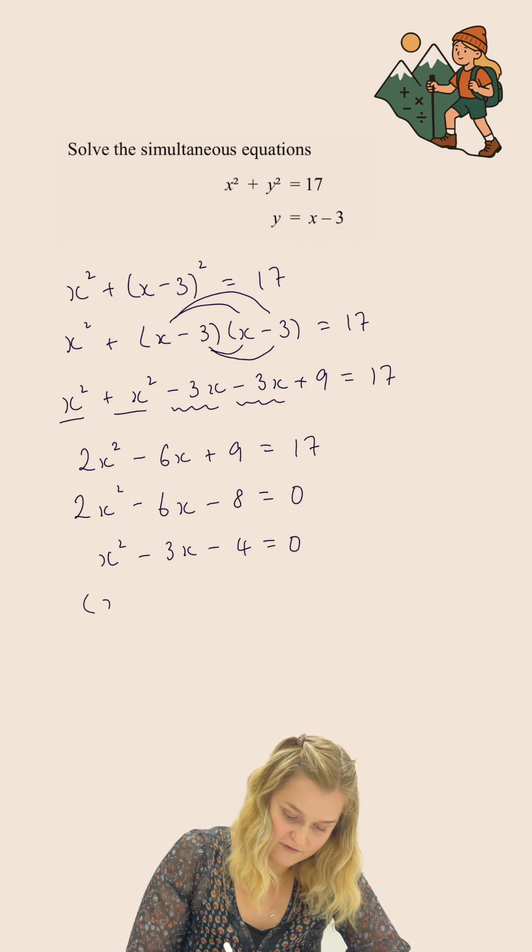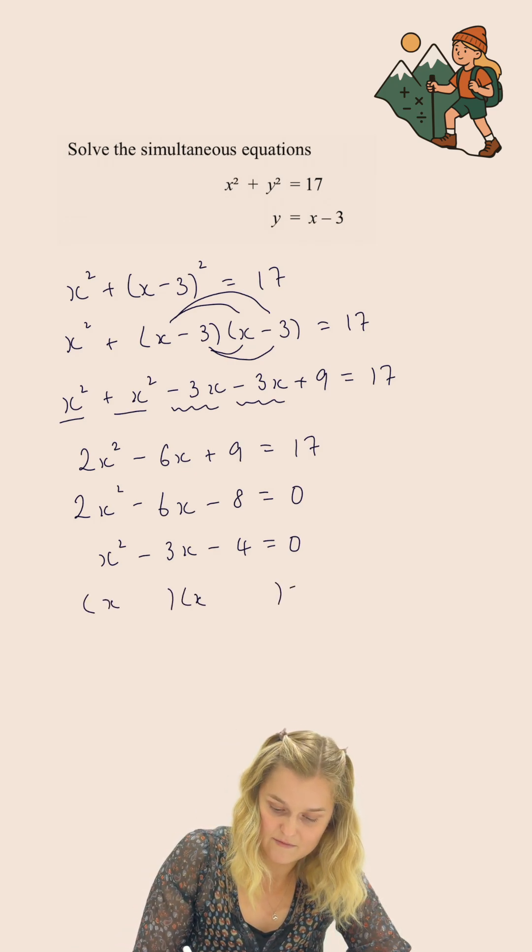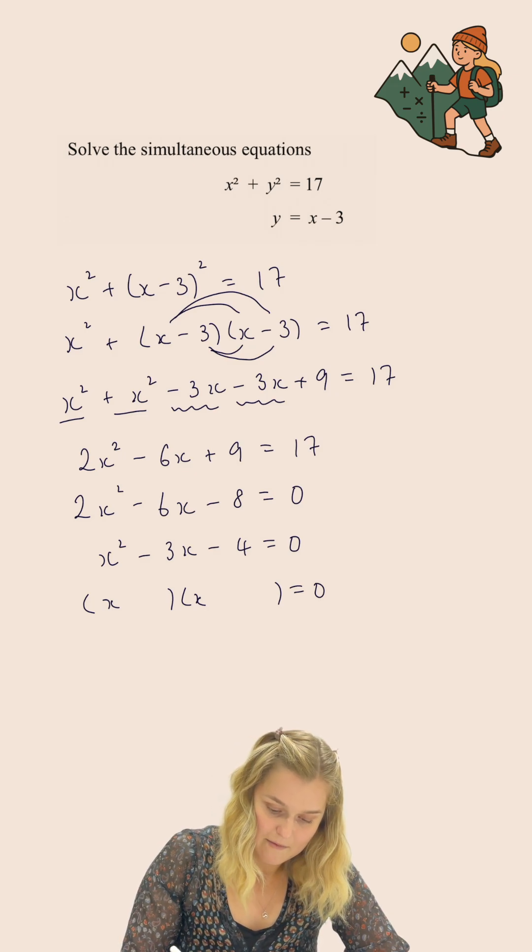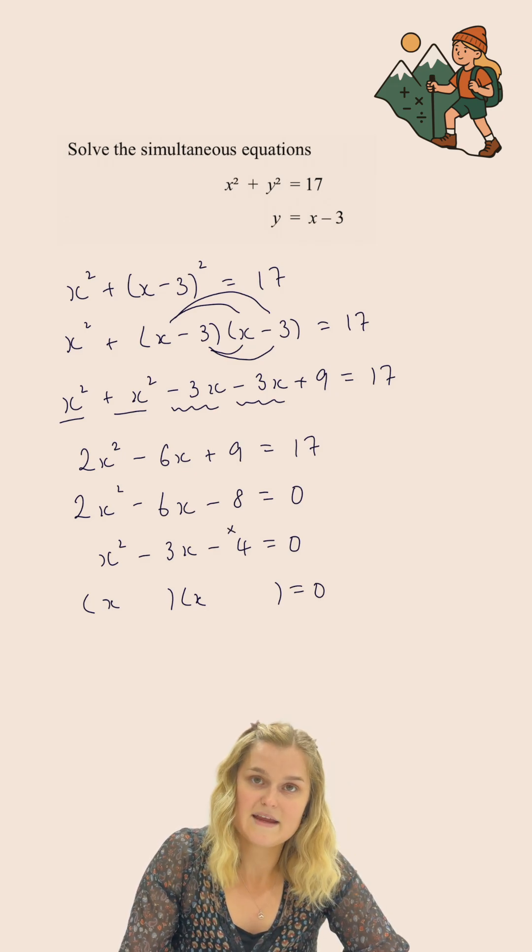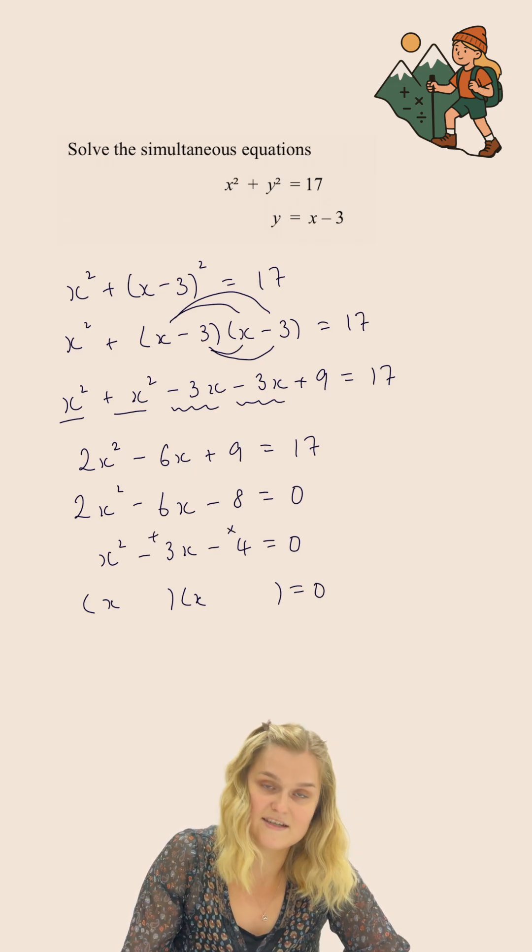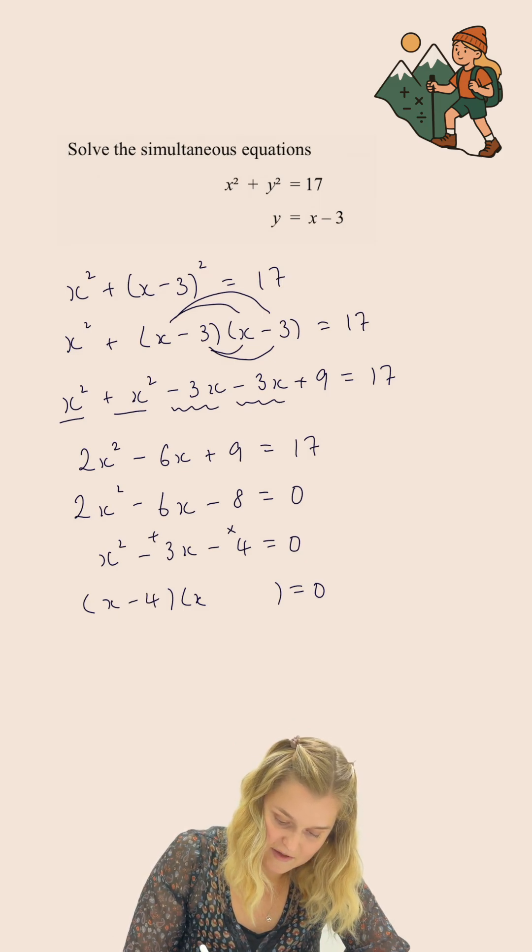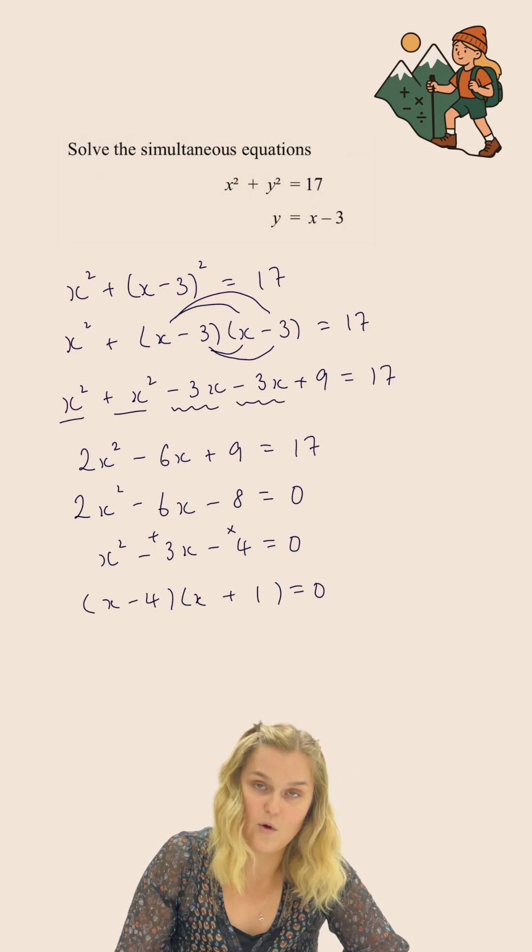This quadratic will factorize, so I can factorize it to find my solutions for x. I'm looking for two numbers that multiply to make negative 4, but add to make negative 3. And in this case, it's going to be minus 4 and plus 1.